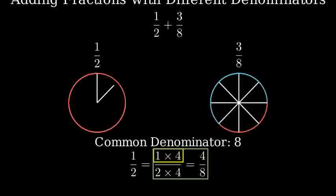Let's see this visually. When we cut each half into 4 equal pieces, we get 8 total pieces. And our 1 half becomes 4 eighths.